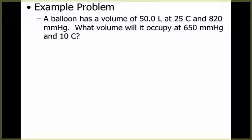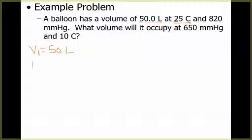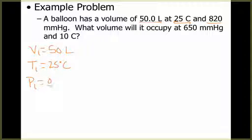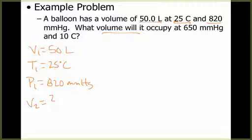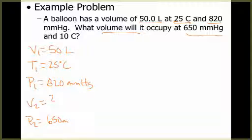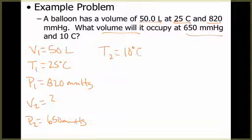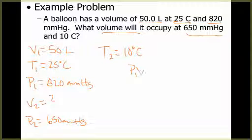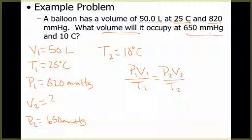For this example: a balloon has a volume of 50 liters at 25 degrees Celsius — so T1 = 25°C — and 820 millimeters of mercury — so P1 = 820 mmHg. We want to know what volume it will occupy at 650 millimeters of mercury — P2 = 650 mmHg — and 10 degrees Celsius — T2 = 10°C. Since they didn't mention moles, we assume moles are constant and leave it out. We also have to convert both Celsius temperatures to Kelvin before putting them into the equation.